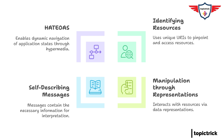And it leads to the final principle of the uniform interface: HATEOAS. HATEOAS stands for Hypermedia as the Engine of Application State. Basically, it means that the API should provide clients with links to related resources within its responses — it's like a built-in navigation system for the API. Instead of having to hard-code URIs into their applications, clients can just follow the links provided by the API. It's like clicking on a 'next page' link on a website — the server tells you where to go next without you needing to know the exact address. HATEOAS makes REST APIs more discoverable and easier to navigate, and it reduces the amount of code that clients need to write.